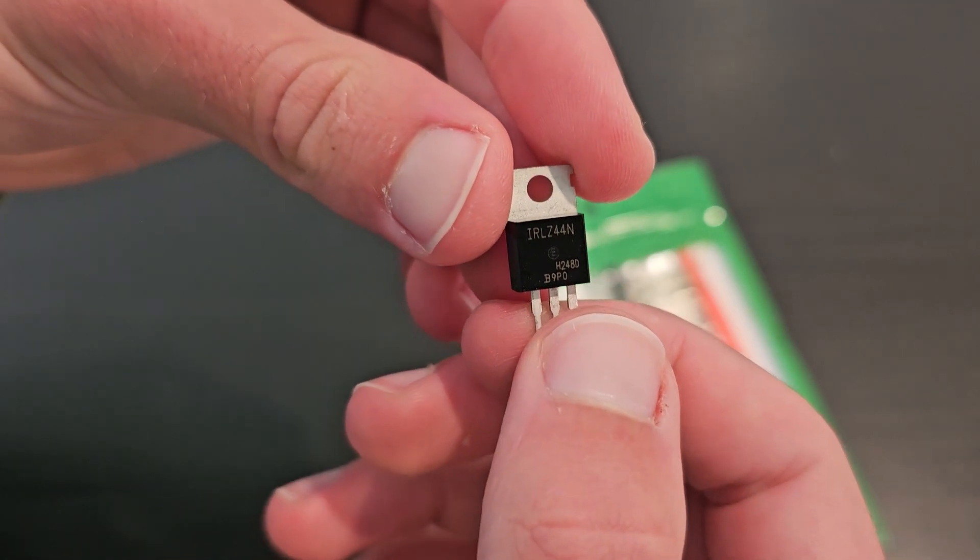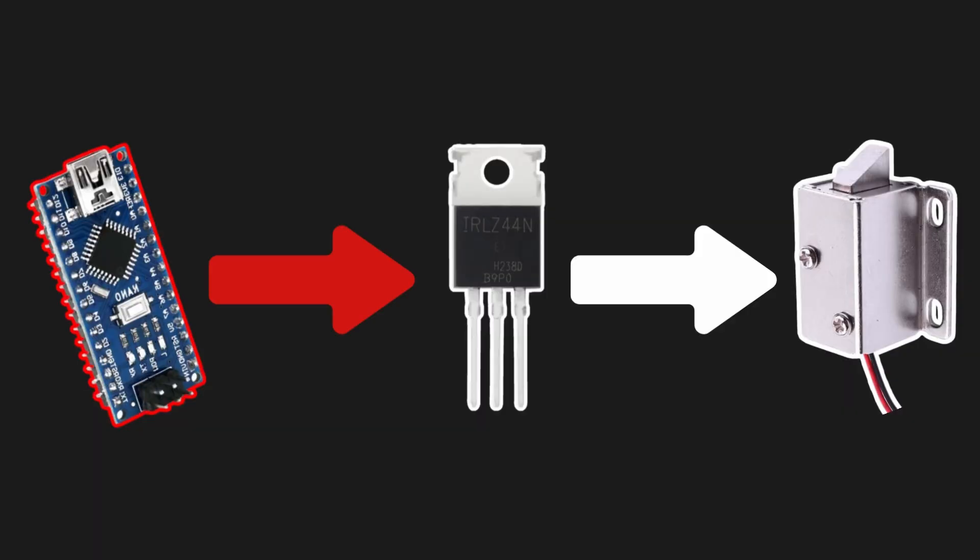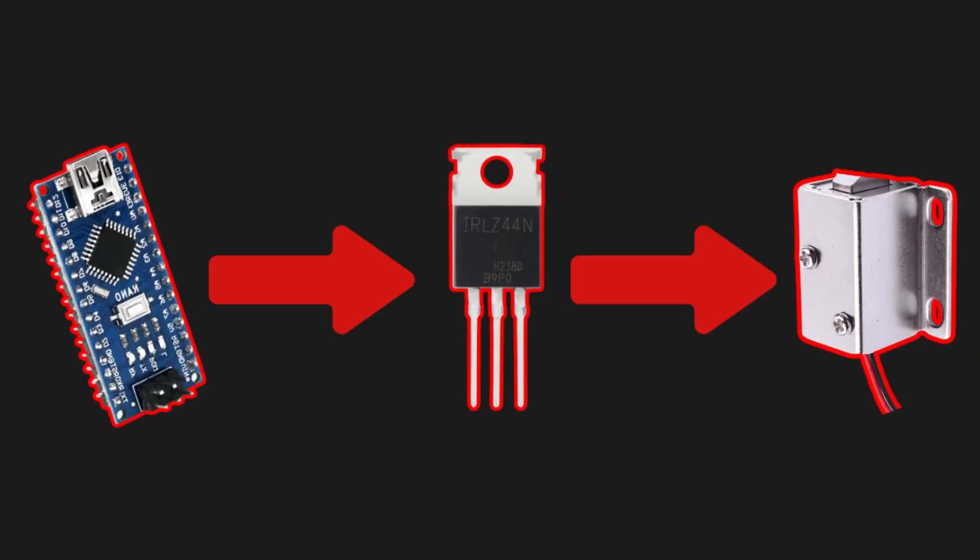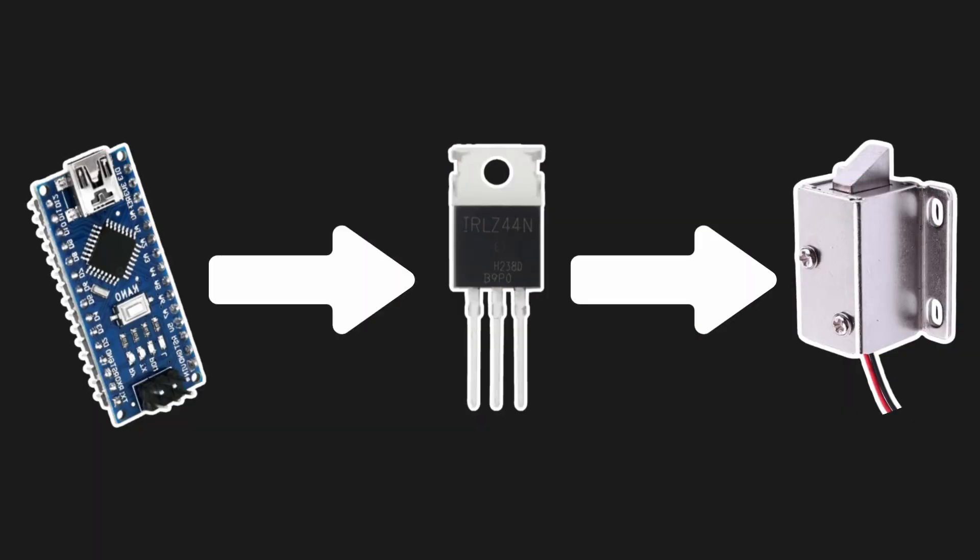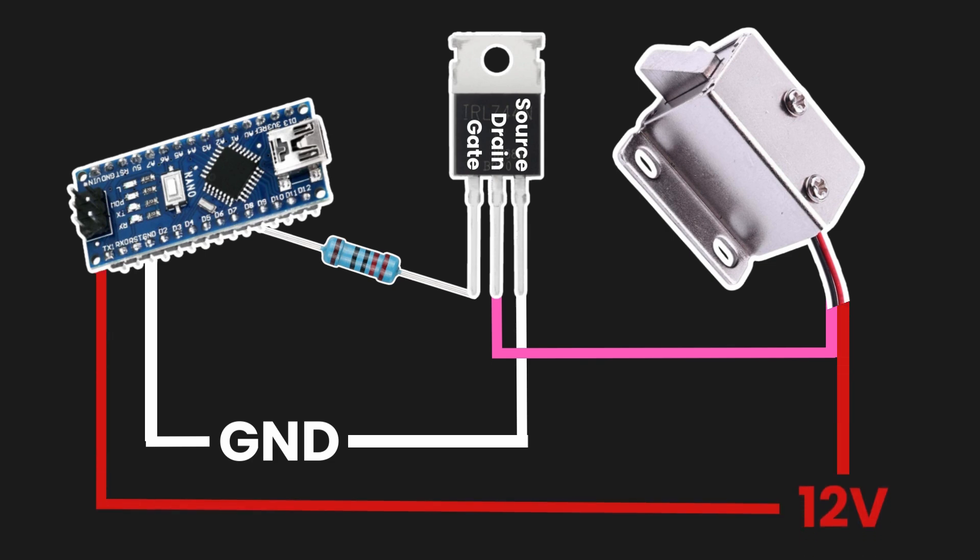To control it, we're going to use a logic level MOSFET, which you can just think of as an electronic switch. This IRLZ44N paired with some other components will let the microcontroller turn the solenoid on and off with just a signal. If you're at all interested in how to wire it up: the source pin connects to the ground, the gate goes to an Arduino pin through a resistor, and the drain connects to one side of our solenoid.